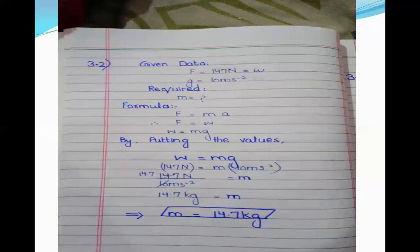According to Newton's second law, F equals ma, and F equals W, so W equals mg. We will find mass using W equals mg. The value of W is 147 and g is 10, so 147 divided by 10 gives the answer: mass is 14.7 kg.